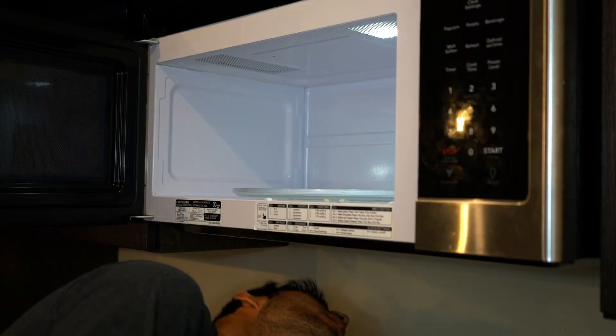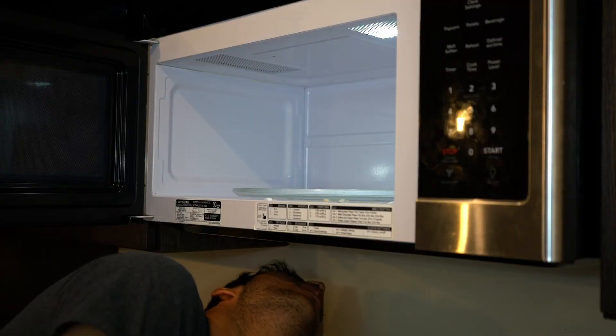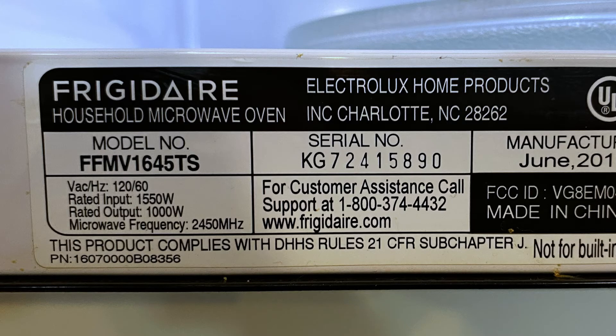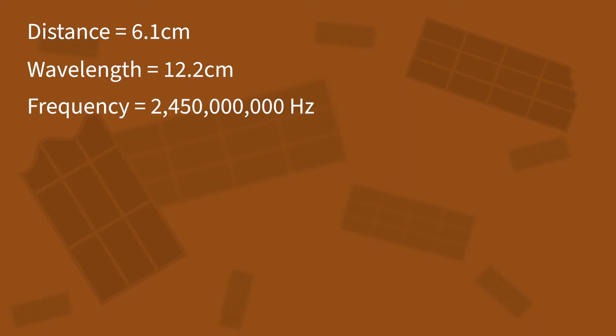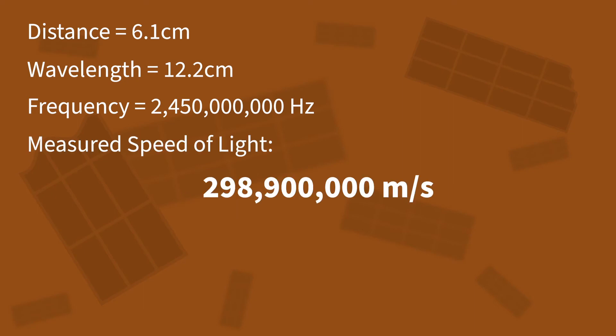Now I need to find the frequency of the wave, which is the number of wavelengths traveled per second. You should be able to find the frequency of your microwaves written somewhere on the appliance. Mine uses microwaves with a frequency of 2450 megahertz, which means that it travels 2,450,000,000 wavelengths in one second. When I multiply the wavelength and frequency together, I get 298,900,000 meters per second as my measured speed of light.